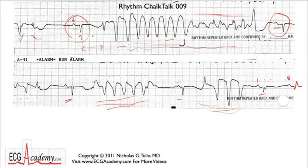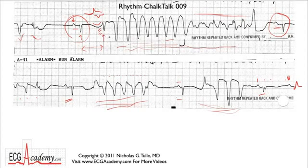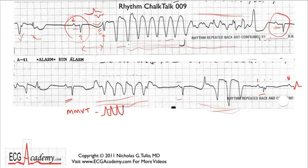Looking at the T wave of the beat that precedes the tachycardia, I don't see any bumps or notches or high-frequency activity that I'd call a P wave. Atrial activity on top of a T wave is usually easy to see, but it's just not here. If there's no P wave in front of this beat, the presumption is that it's ventricular. With rates in the 150 to 200 range, we're talking about ventricular tachycardia. Let's think about VT and remember the classification.